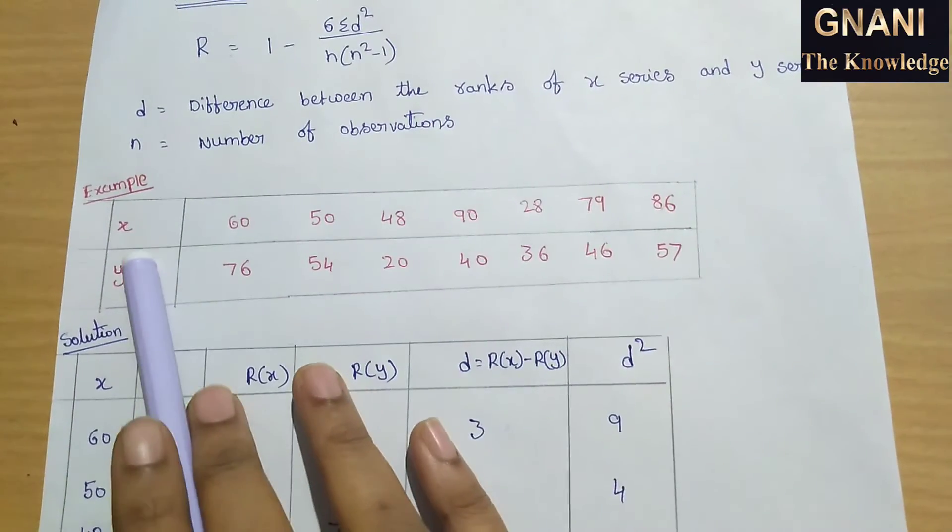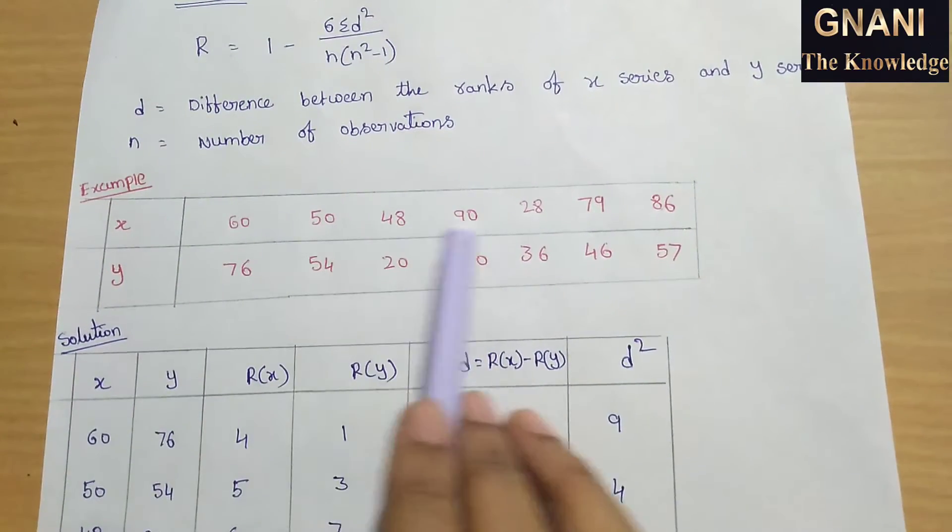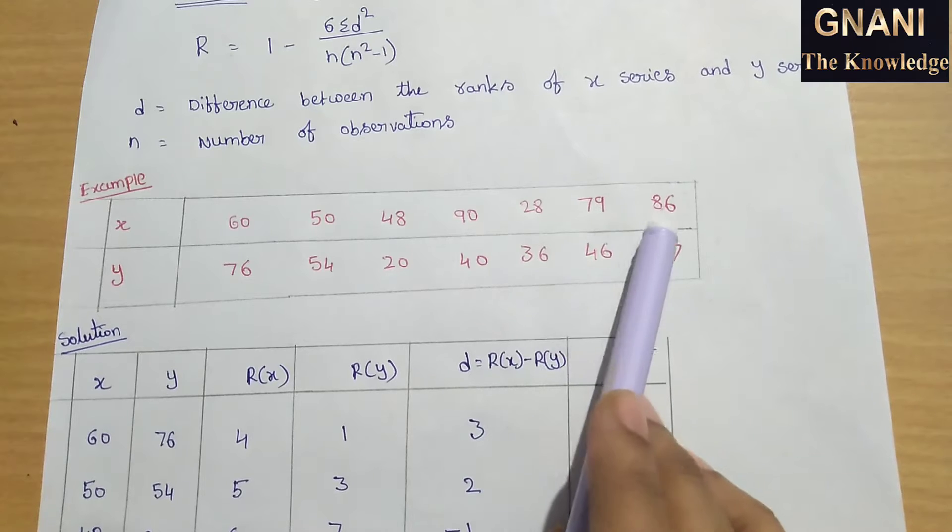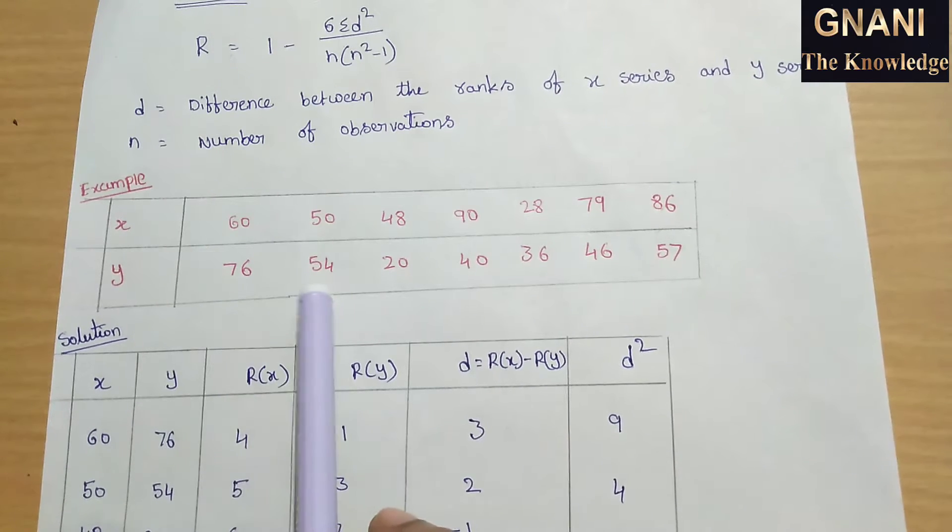Here, one example problem. The x series: 60, 50, 48, 90, 28, 79, 86. And y series: 76, 54, 20, 40, 36, 46, 57.